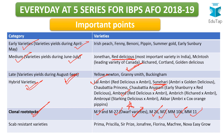For scab-resistant varieties: since apple scab is a major disease, certain varieties are resistant to it. These include Prima, Priscilla, Jonafree, Florina, and Macfree. Reading these names once or twice will help you identify them as apple varieties in exam options.